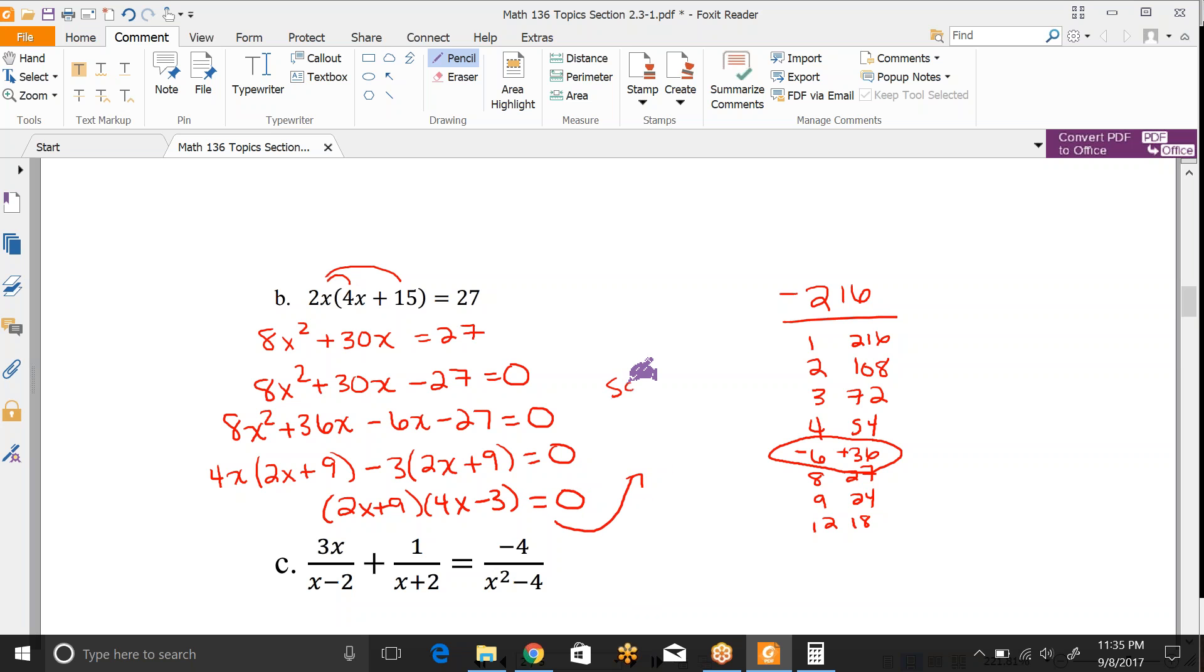I've now factored it and now I'm going to solve. You set each part equal to 0 and get x by itself. So subtract 9, divide by 2. So negative 9 halves is one of my solutions. And then 4x - 3 = 0, we would add 3 and then divide by 4. So 3 fourths. And there are my two solutions for that one.